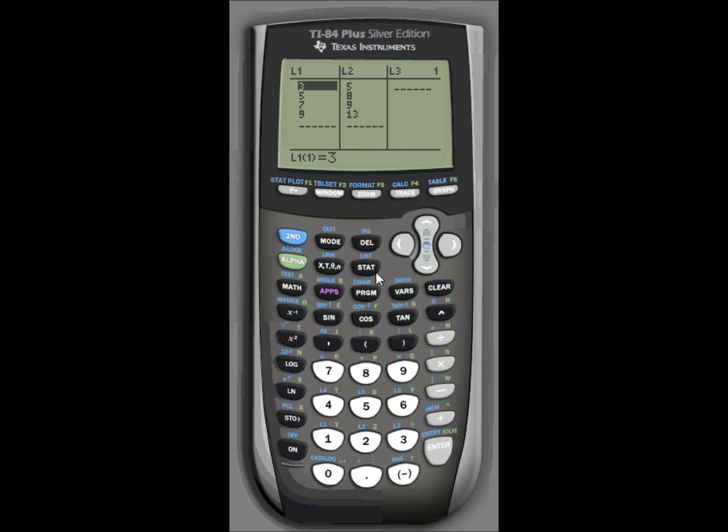If there's data in your table, you should arrow up and highlight the name of the column. Press clear and then enter. You can do that to the next column if there's anything in it. Go up to the top so the name of the list is highlighted. Hit clear and press enter.